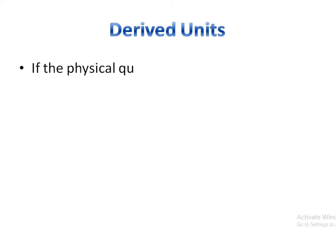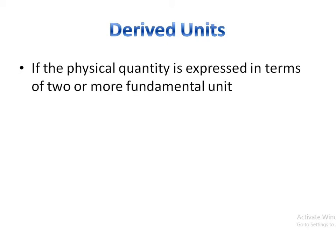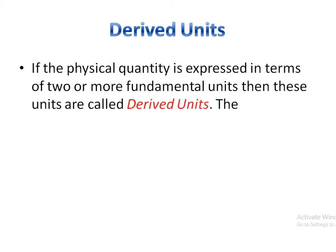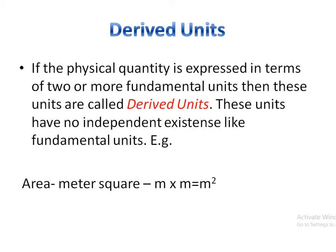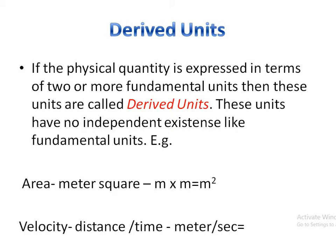Derived units. If a physical quantity is expressed in terms of two or more fundamental units, then these units are called derived units. These units have no independent existence like fundamental units. For example, area is measured in meter square, obtained by multiplying meter by meter. Velocity is measured by distance divided by time — meters per second. Derived units are always formed by multiplication or division of fundamental units.